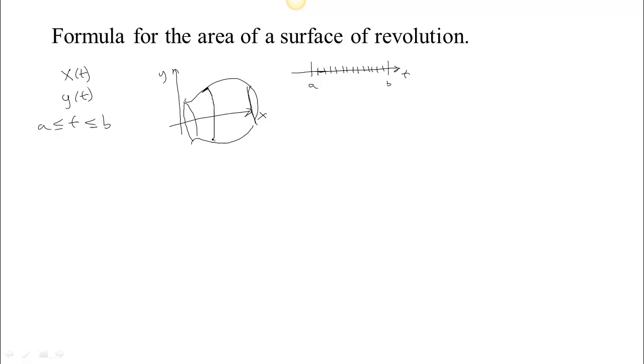That little bit of change along the curve, when it gets revolved, becomes a little ribbon of surface area. So basically, by partitioning t, we're actually breaking up this vase into little ribbons. And we're going to see if we can calculate the area of one little ribbon.